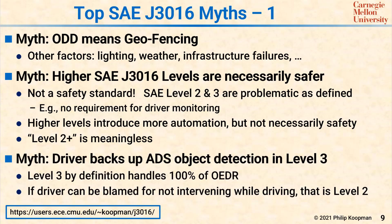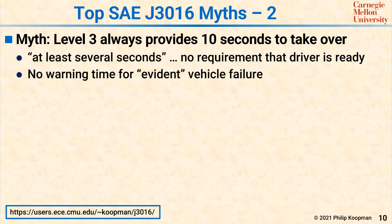Another myth is that the driver backs up the ADS object detection in Level 3. People say that if something goes wrong, the driver is supposed to notice — but that cannot be true because Level 3 by definition handles all objects and events and plans responses to them. If a driver can be blamed for not intervening during the normal driving task, that is by definition a Level 2 system. It is also a myth that Level 3 always provides 10 seconds of delay time for a human driver to take over. The standard does not say 10 seconds anywhere — it says at least several seconds, but that might be only three seconds. There is also zero warning time for an evident vehicle failure: if you have a tire blowout, there may be zero delay and the vehicle may insist you take over immediately even though the ADS does not tell you anything is wrong.